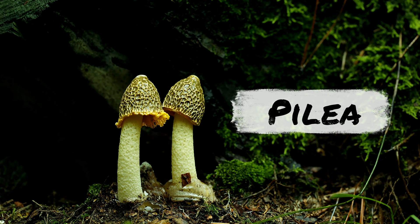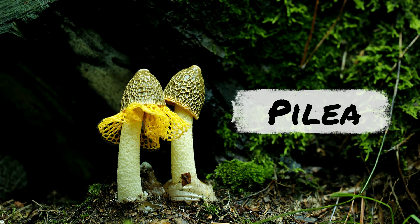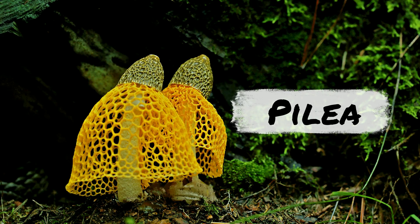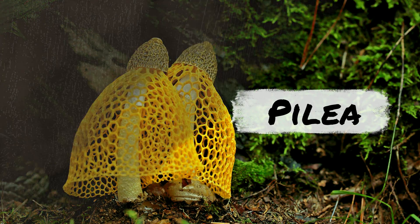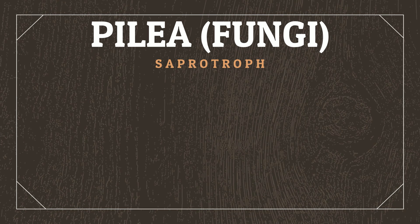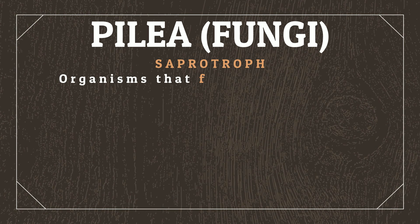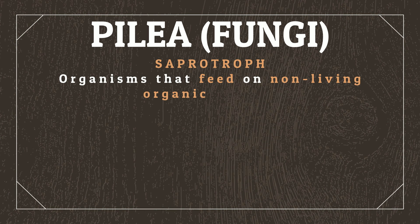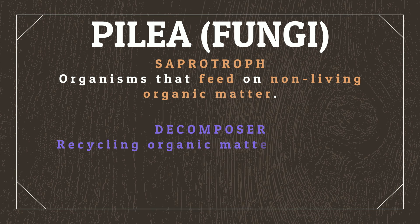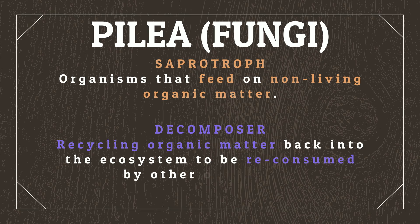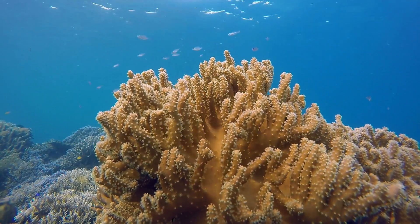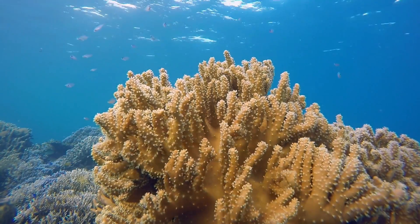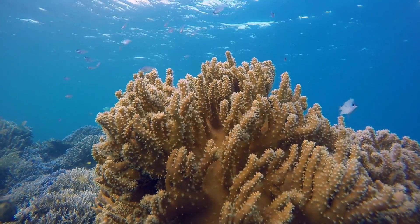Next we have Pilia, which represent fungi, forming long branching filamentous structures that reproduce asexually. The Pilia are the first saprotrophs — organisms that feed on non-living organic matter. In their ecosystems, they play important roles as decomposers, recycling organic matter back into the ecosystem to be reconsumed by other organisms. As primordial ocean dwellers, they would settle on the ocean floor and feed off the detritus that falls from above.